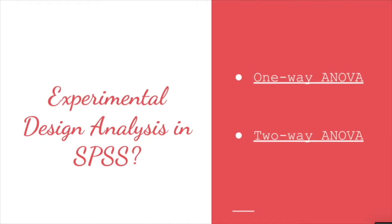In SPSS, to do experimental design can be used by ANOVA. There are two types of ANOVA, one-way ANOVA and two-way ANOVA. Aditya and Marsha are going to explain about ANOVA in SPSS.